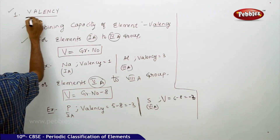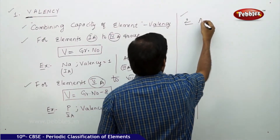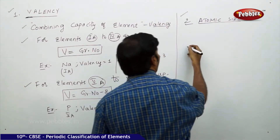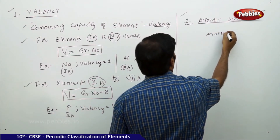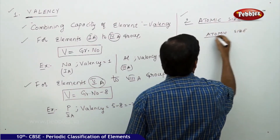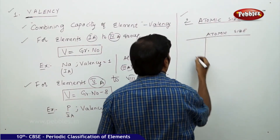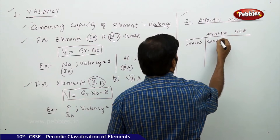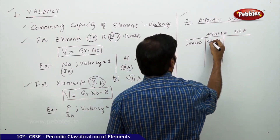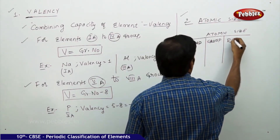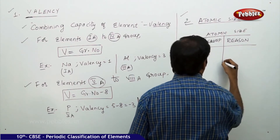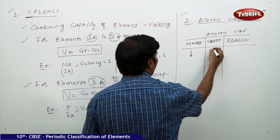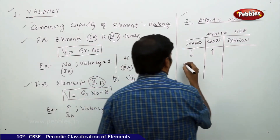The second topic is atomic size. Considering a period and a group: in a group, atomic size increases as you go down.